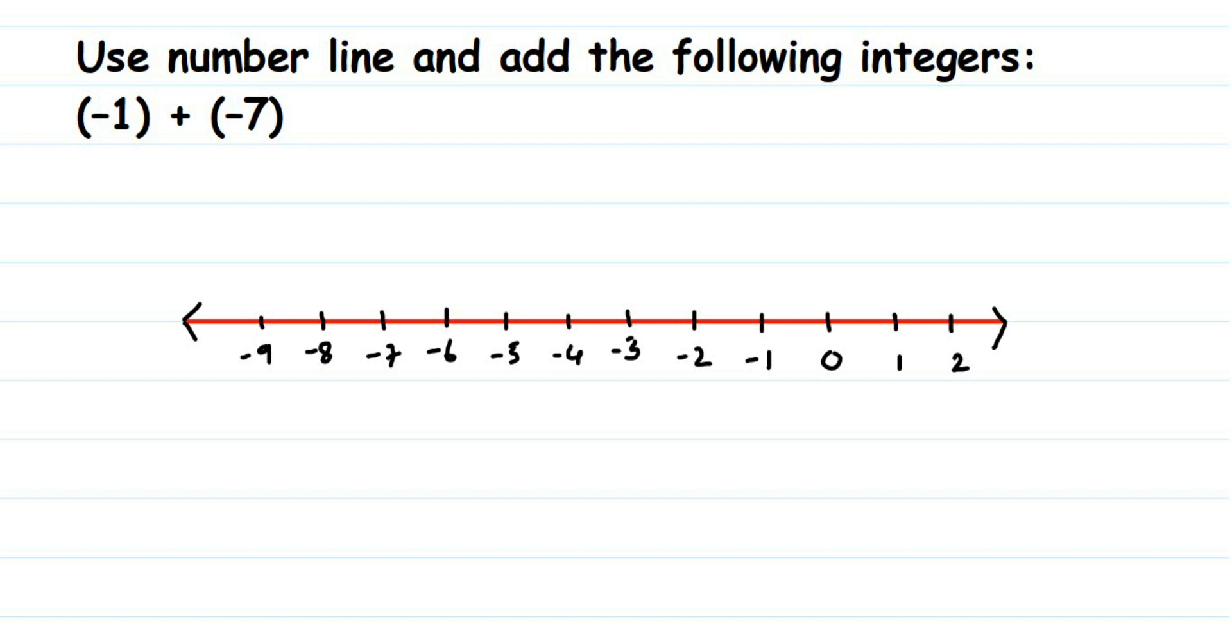Hello everyone, here is a question on number line. The question is: use number line to add the following integers, minus 1 plus minus 7. So I've taken a number line here. Zero is written here. It's not necessary you should take zero at the center.